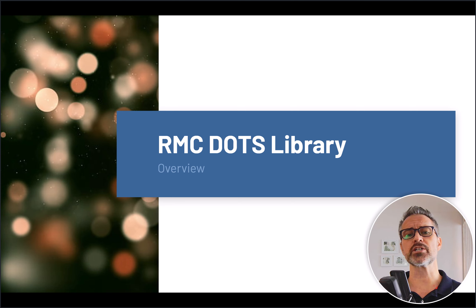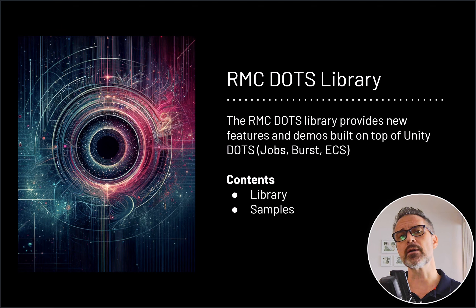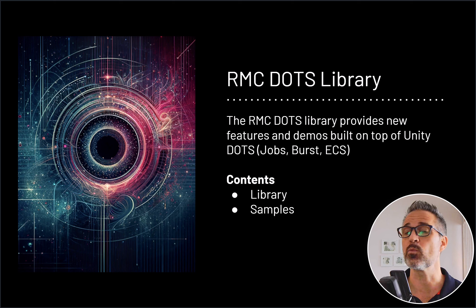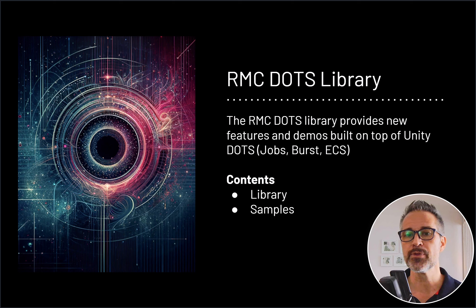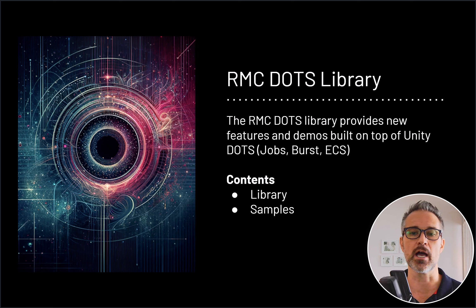Now a brief introduction to the RMC Dots library. This is something that I created custom. It's available on Git — if you want to learn more about what it is and what's inside of it, you can take a look at the links above and in the description below. The RMC Dots library provides new features and demos built on top of Unity Dots — Jobs, Burst, and ECS, as well as some other supporting libraries. Inside the RMC Dots library you have the library itself with some helpful features, and then samples built on top of it.